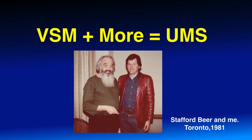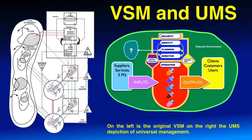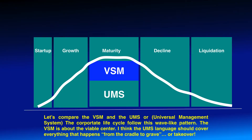The viable system model plus more equals the universal management system. On the left is the original VSM, on the right the UMS, its depiction of universal management. Let's compare the VSM to the UMS.